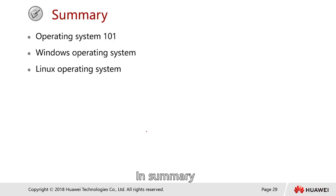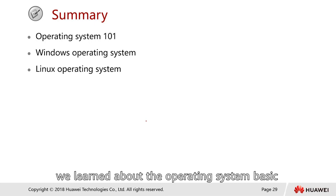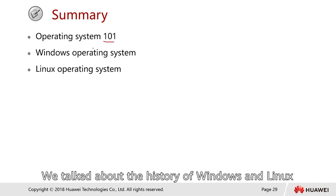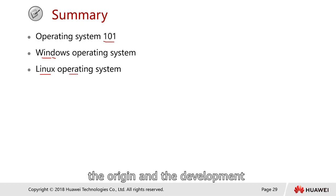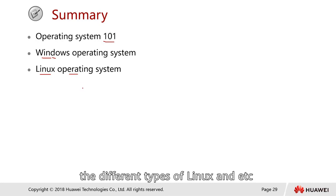In summary, in this chapter we learned about operating system basics, the history of Windows and Linux, their features, usage, and applications. We also covered the origin and development of Linux, the different types of Linux distributions, and so on.